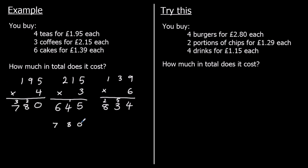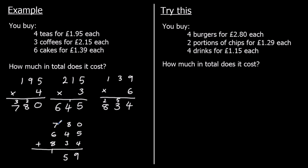We're going to line up the numbers: hundreds with hundreds, tens with tens, ones with ones, and we add down. Starting with the ones: five and four make nine. Eight plus four plus three — twelve plus three is fifteen. And seven plus six plus eight — seven and six make thirteen, plus eight is twenty-one, plus one is twenty-two. So we've got twenty-two pounds and fifty-nine pence.